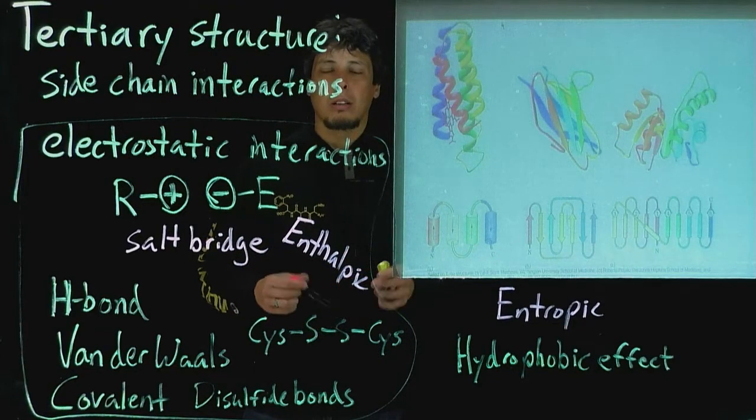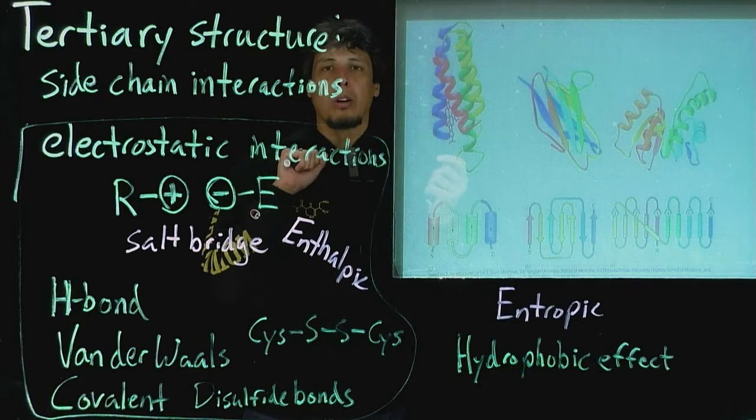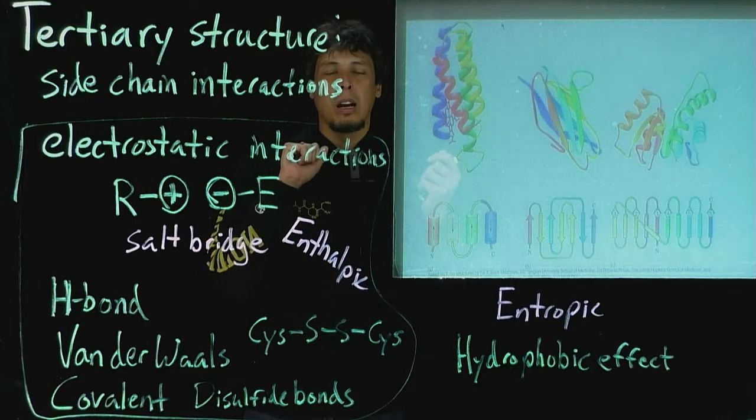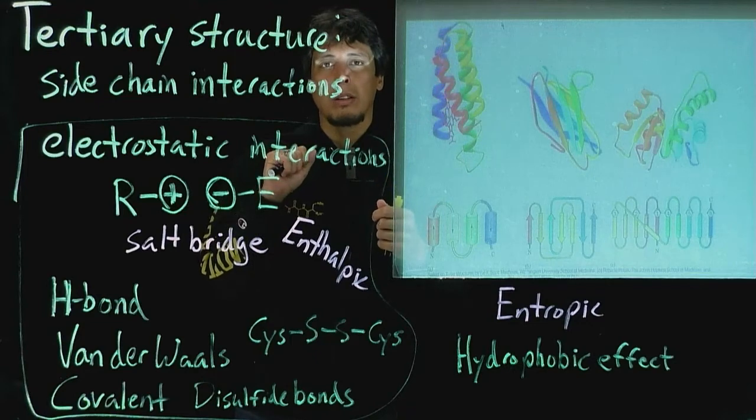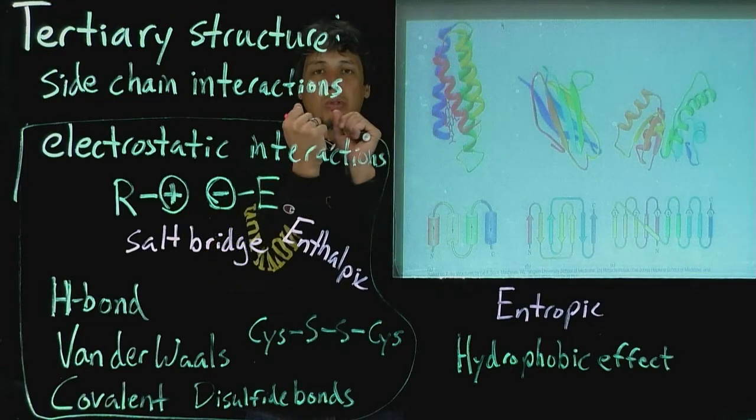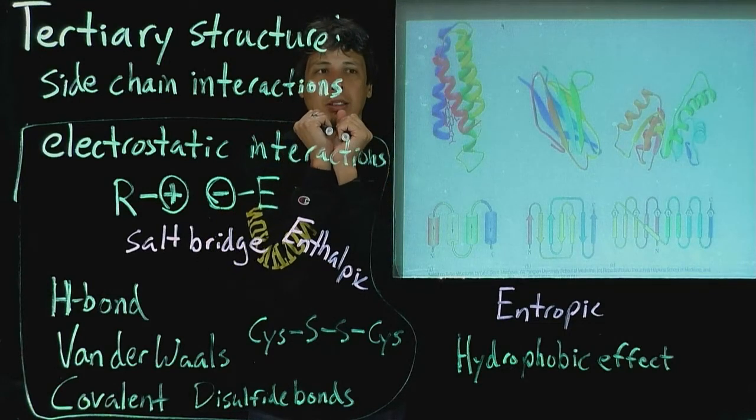So the hydrophobic effect causes this collapse, where the hydrophobic residues or the hydrophobic sides of these secondary structures, all point towards each other on the inside, much like a micelle. And so they hide from the water outside.